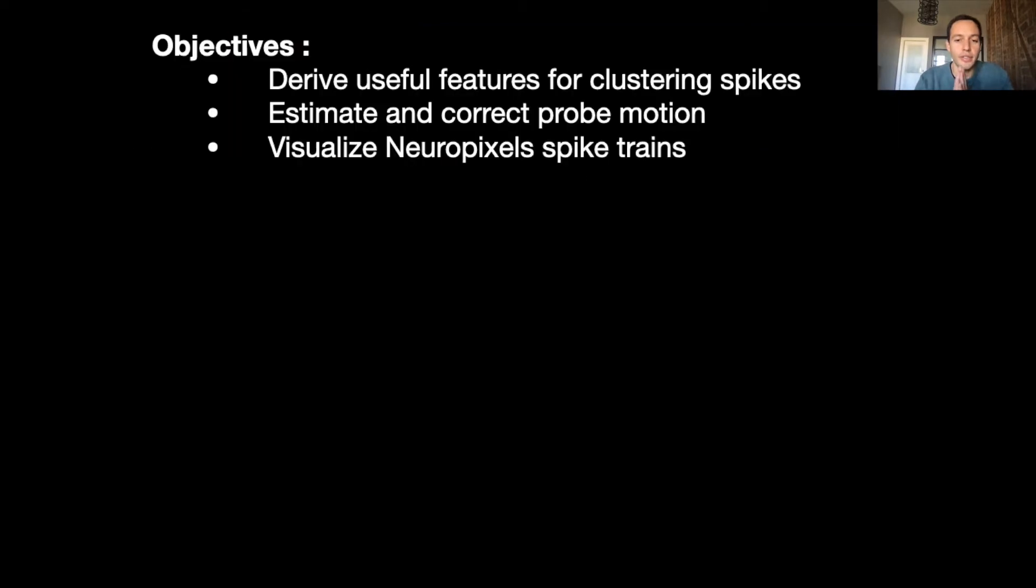The goal of localization is first to compute features that will help better clustering spikes and outputting better quality spike trains. Secondly, we want to have accurate localization of spikes to allow for precise and efficient motion estimation, and finally it allows us to build cool diagnostic and visualization tools for Neuropixels spike sorters.